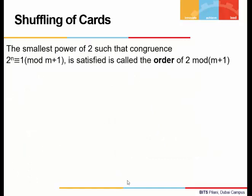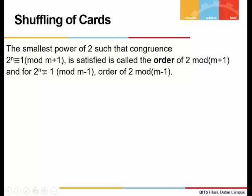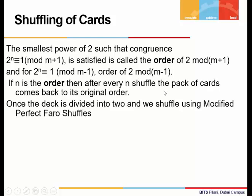One definition: the smallest power of any integer which gives congruence to 1 mod of the modulus is known as the order. Here, because our integer is 2, if n is the smallest power such that 2 to the power n is congruent to 1 mod of m plus 1, then n is the order of 2 mod of m plus 1. Similarly, if n is the smallest power such that 2 to the power n is congruent to 1 mod of m minus 1, then n is called the order of 2 mod of m minus 1. If n is the order, then after every n shuffles, the pack of cards will come back to its original order.